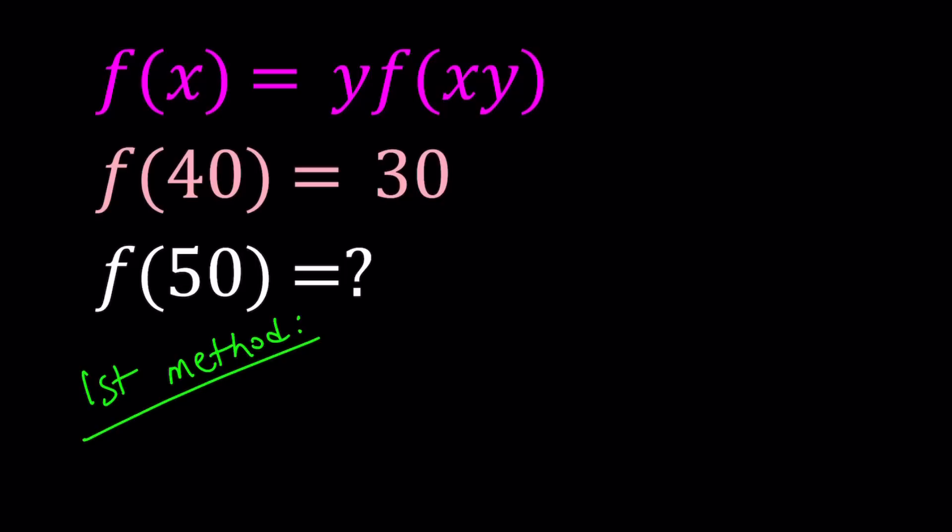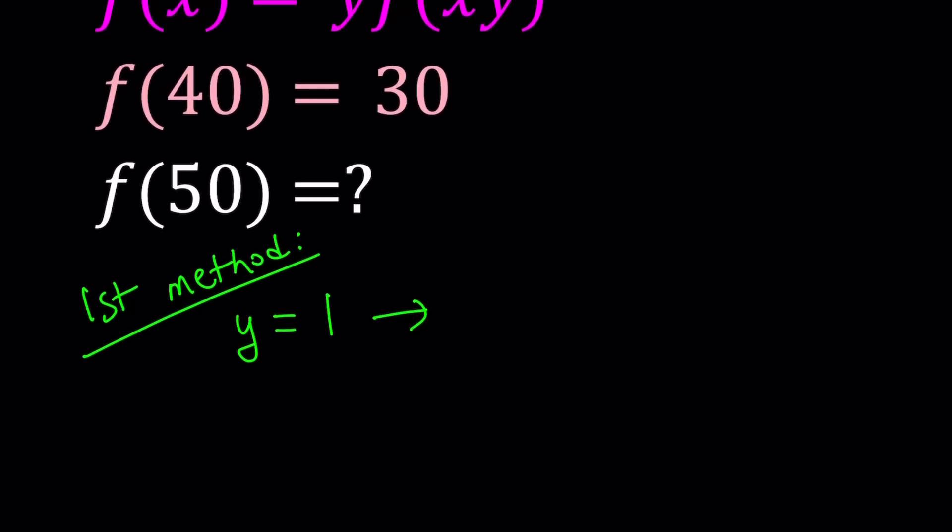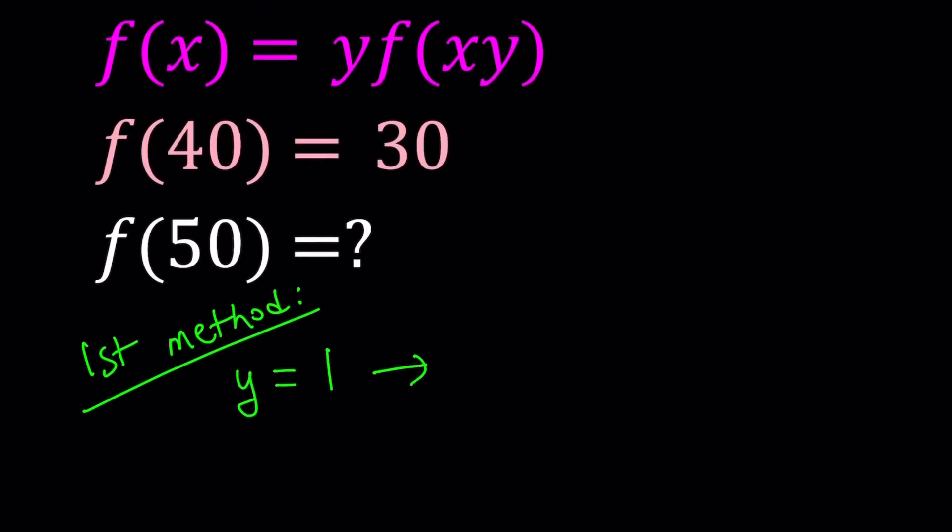My first method, for my first method, I'm just going to set y equals 1. So this is not going to be something that will definitely be helpful, but I'm just testing it. So if I replace y with 1 on both sides, left-hand side doesn't contain any y, so it's just going to stay as is. f(x) is going to be y, which is 1, times f(xy), which is x in this case. This gave me f(x) equals f(x), which is always true, but it doesn't help me. It's nice, but it's not helpful.